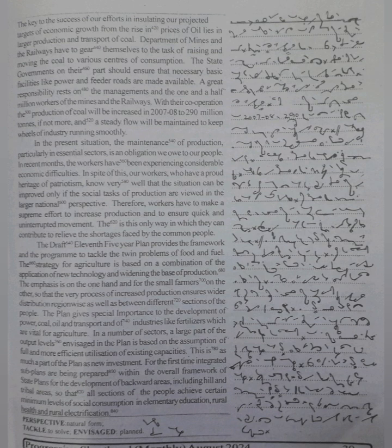The draft Eleventh Five-Year Plan provides the framework and the program to tackle the twin problems of food and fuel. The strategy for agriculture is based on a combination of the application of new technology and widening the base of production. The emphasis is on the one hand for the small farmers on the other, so that the very process of increased production ensures wider distribution region-wise as well as between different sections of the people.